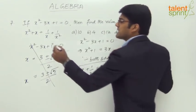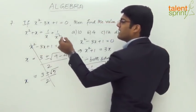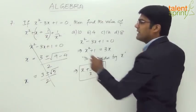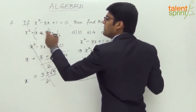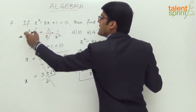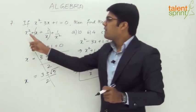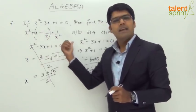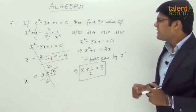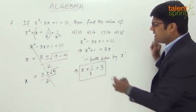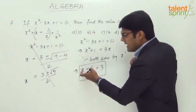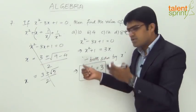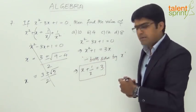Look at the expression x squared plus x plus 1 by x plus 1 by x squared. We have already obtained the value of x plus 1 by x, which is 3. What we still need is x squared plus 1 by x squared. If we get that, we can just add 3 to it and get the required answer. To find x squared plus 1 by x squared, let's square both sides of x plus 1 by x equals 3, using the identity a plus b whole squared equals a squared plus b squared plus 2ab.